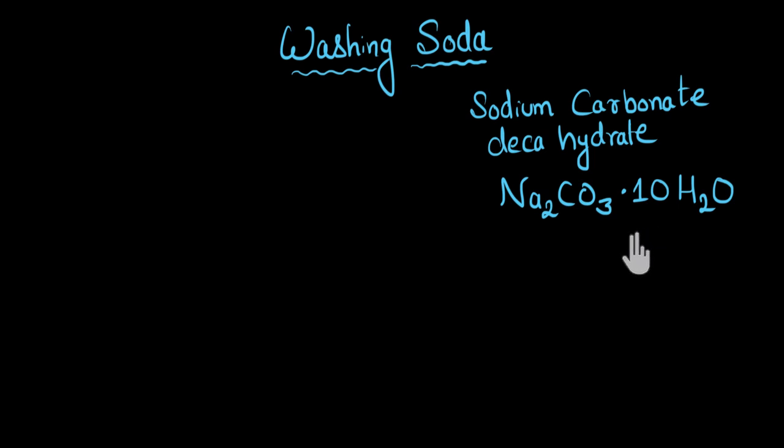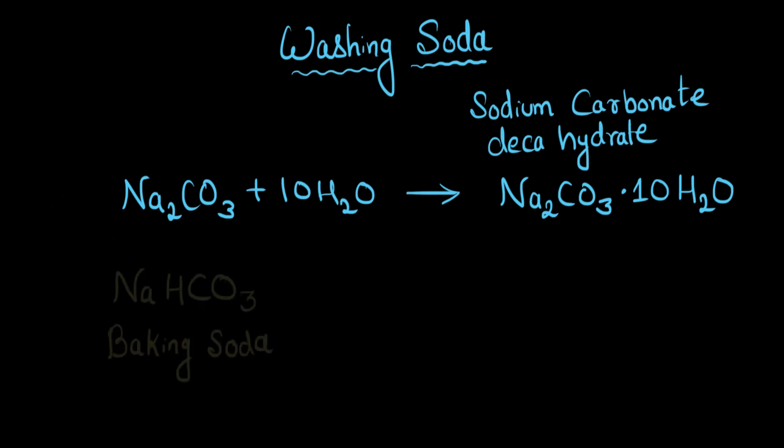Now let's see how to make it. Technically speaking, if you have sodium carbonate or Na₂CO₃ and you add 10 molecules of H₂O to it, you should get your washing soda, right? But you might be wondering how do I get Na₂CO₃? So for this, we use baking soda. The formula of baking soda is NaHCO₃, sodium hydrogen carbonate. And when we heat it, it decomposes to give us Na₂CO₃. So let's heat it.